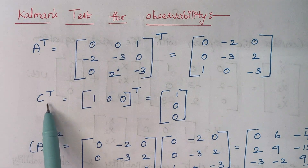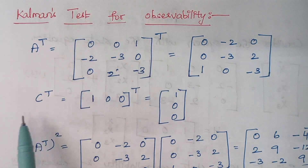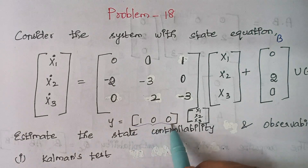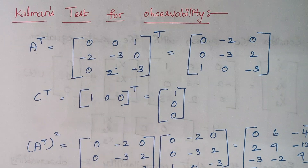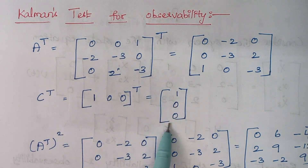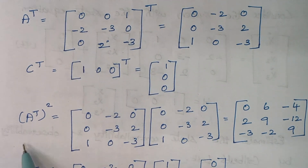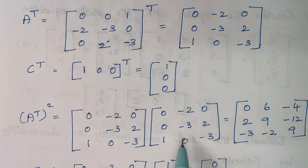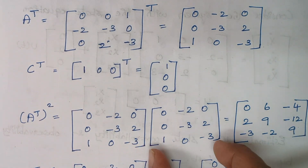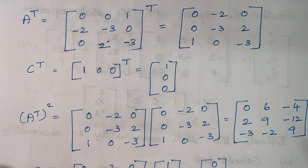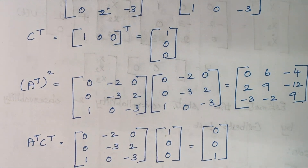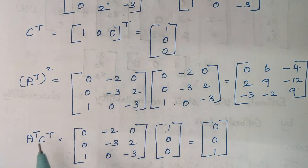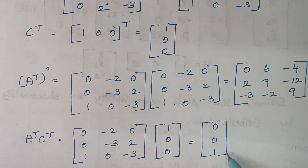The next thing needed is C transpose. C is given in the problem — this is the C matrix. For C transpose we again change rows into columns. Then we compute (A transpose)², which means multiplying the A transpose matrix by itself. Once multiplied, we end up with a resulting matrix. We also calculate A-transpose times C-transpose by substituting the known values, and multiplying gives us another resulting matrix.